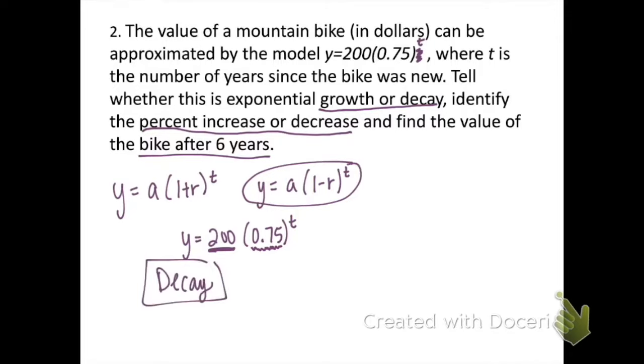Next we need to figure out what the rate is, the percent decrease. So we're going to ask ourselves, to get 0.75, I have to take one minus what value? Some of you may know that number right off the top of your head. Some of you may need to try some things in your calculator and that's fine. But what we find is that if we take one minus 0.25, that gives us 0.75. So our rate of decrease is 25%.